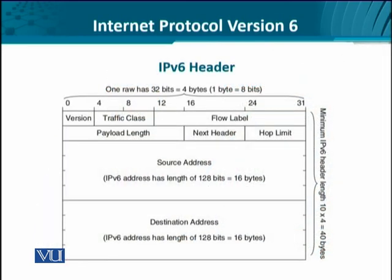The IPv6 header is shown here. We see certain fields like version, similar to the previous one; traffic class, quite similar to the type of service field; flow label, which is a new field; payload length, similar to the last one; next header, which we have already discussed; hop limit, akin to TTL or time to live; and the source and destination addresses, which have now been extended from 32 bits to 128 bits. This results in a very large increase in the overall address space in IPv6.